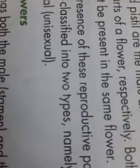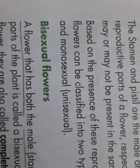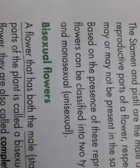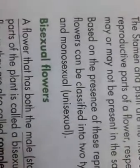Based on the presence of these reproductive parts, flowers can be classified into two types, named bisexual and monosexual. Bisexual means bi — two — meaning both parts are present. Monosexual, also called unisexual, means mono — one or single — meaning only one reproductive part is present.